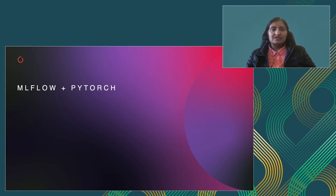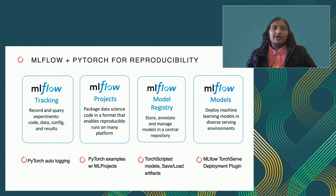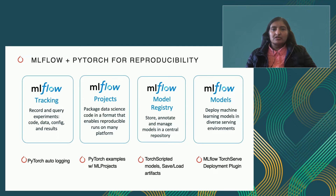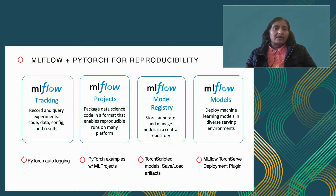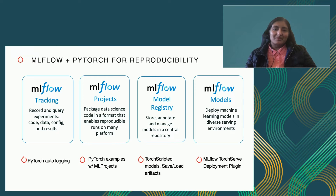Let's look at the solution on the production side. By combining MLflow with PyTorch, we can get to reproducibility for models deployed in production. MLflow comes with a great set of features for experiment tracking, model projects, the model registry, and model deployment. By integrating PyTorch into each of these components, you can now get reproducibility for PyTorch models running on MLflow. The features we are launching include PyTorch auto-logging, examples with ML projects, TorchScript versions of models, the ability to save and load artifacts, and a new TorchServe deployment plugin.